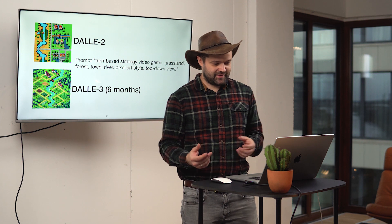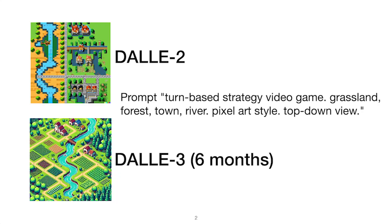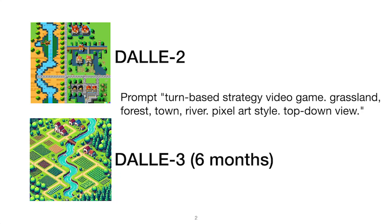Here's a comparison: generating a video game for a turn-based strategy with pixel art from a top-down view, with forests, towns, rivers, and so on. DALL-E 2 gave a really rough, not beautiful result, while DALL-E 3 is almost as an artist would have made it.